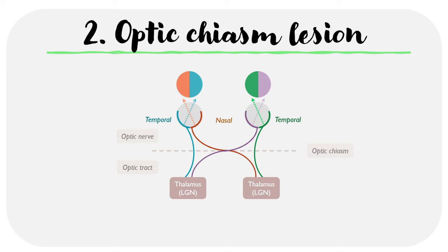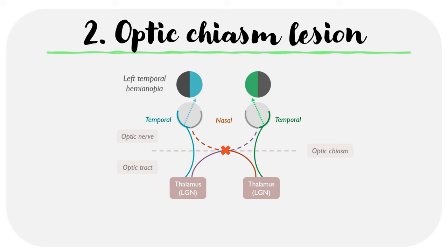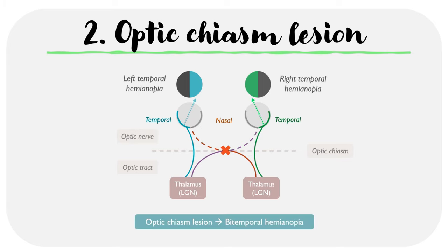Let's now take a look at the second type of lesion: an optic chiasm lesion. This affects the region where the nasal fibers cross over, and both the red and purple lines are affected. Tracing the red line, it corresponds to the nasal retina in the left eye, so we lose the temporal visual field in the left eye — a left temporal hemianopia. Tracing the purple line, we lose the nasal retina in the right eye and subsequently the right temporal visual field — a right temporal hemianopia. Together, an optic chiasm lesion leads to a bitemporal hemianopia, and this can classically be caused by a pituitary adenoma.